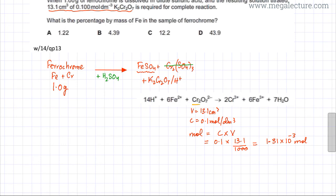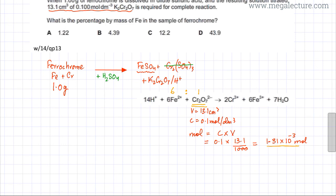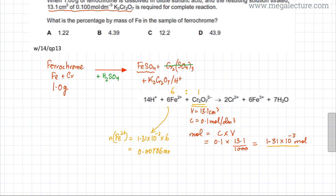Once we have the moles of dichromate(VI) ions, it is straightforward to find the moles of Fe²⁺ ions because the molar ratio is 1:6 — one dichromate ion reacts with six Fe²⁺ ions. So the moles of Fe²⁺ = 1.31 × 10⁻³ × 6 = 0.00786 moles of Fe²⁺.